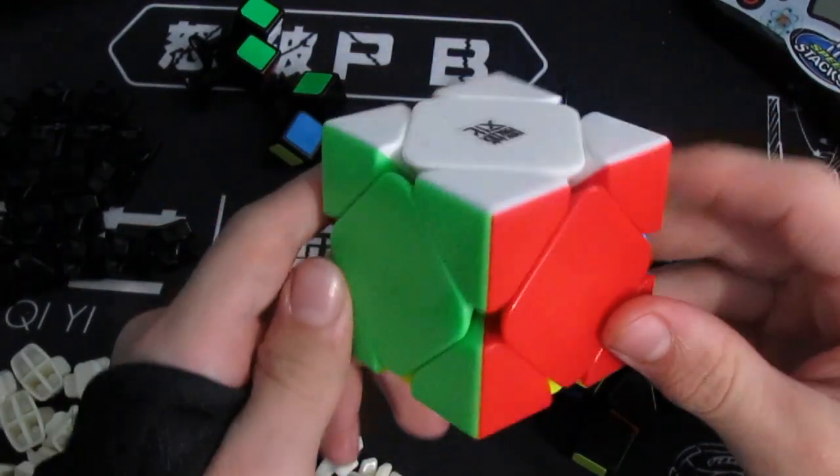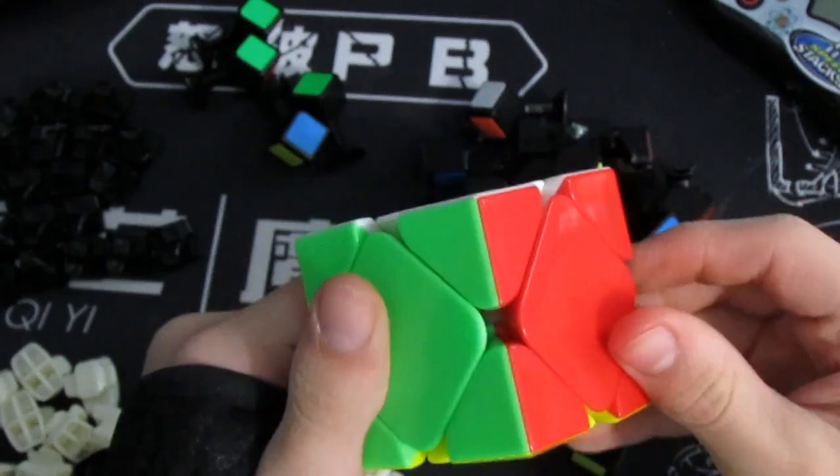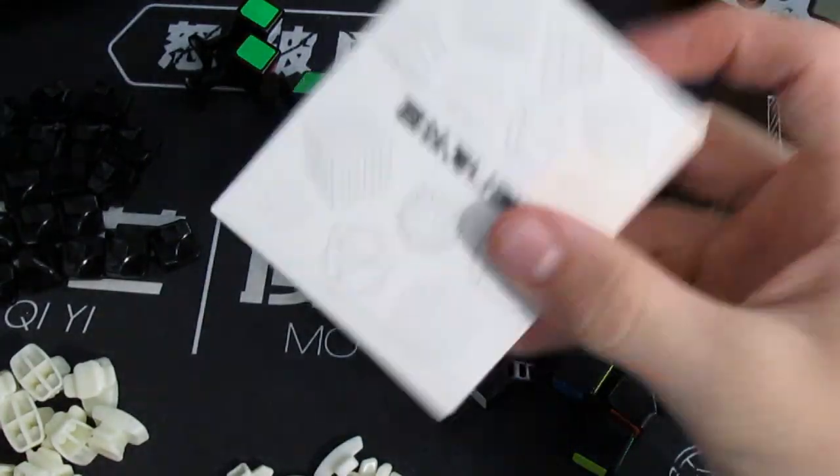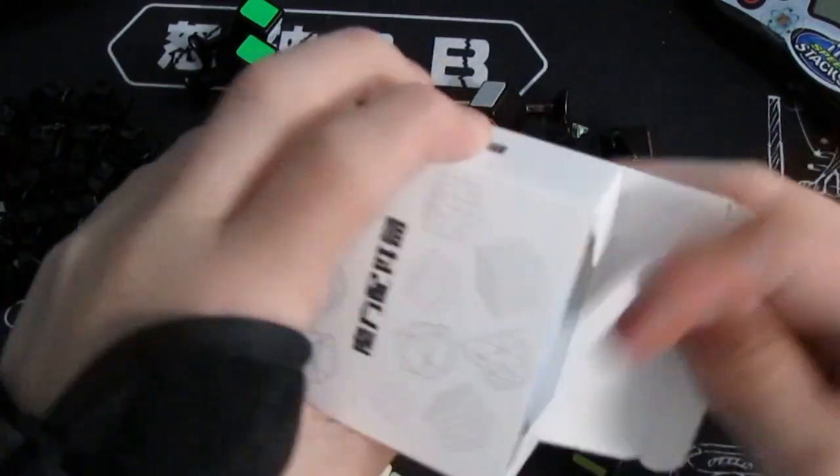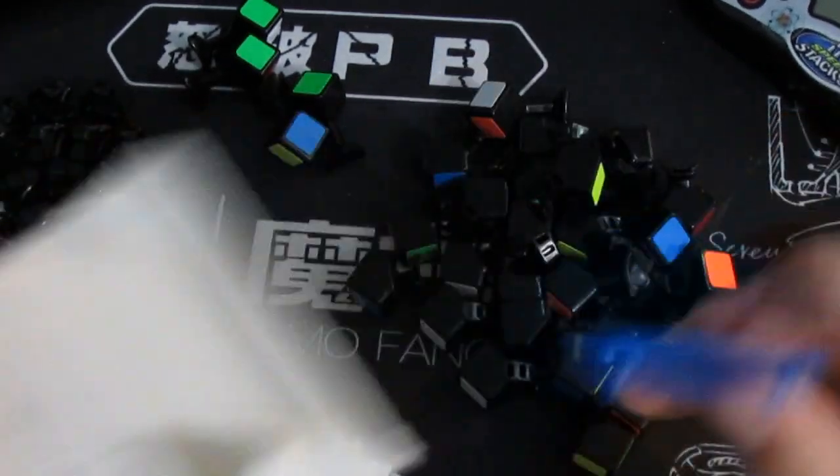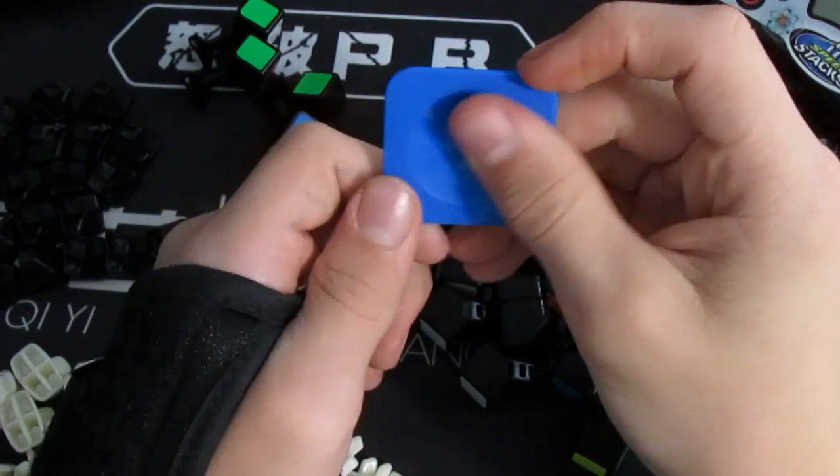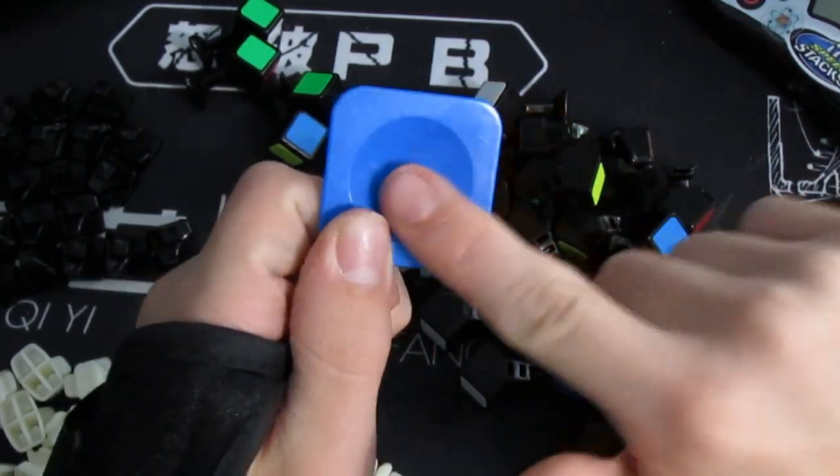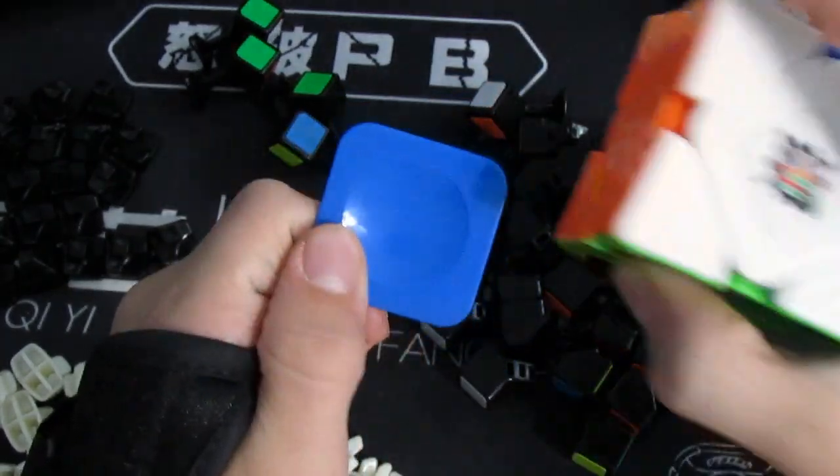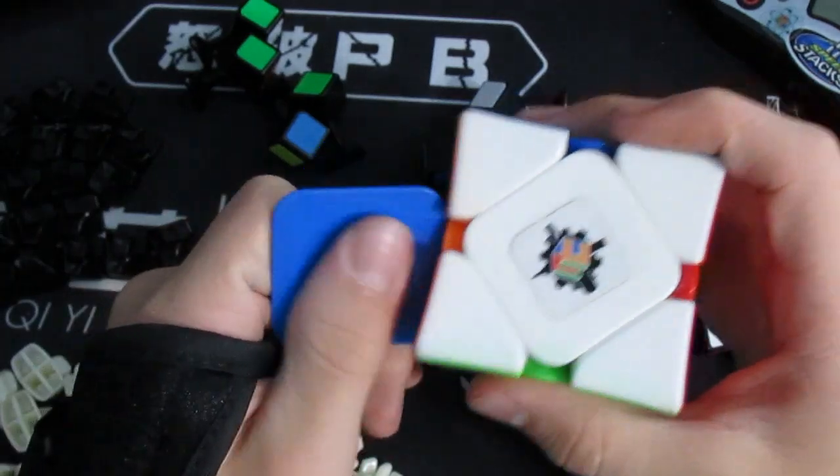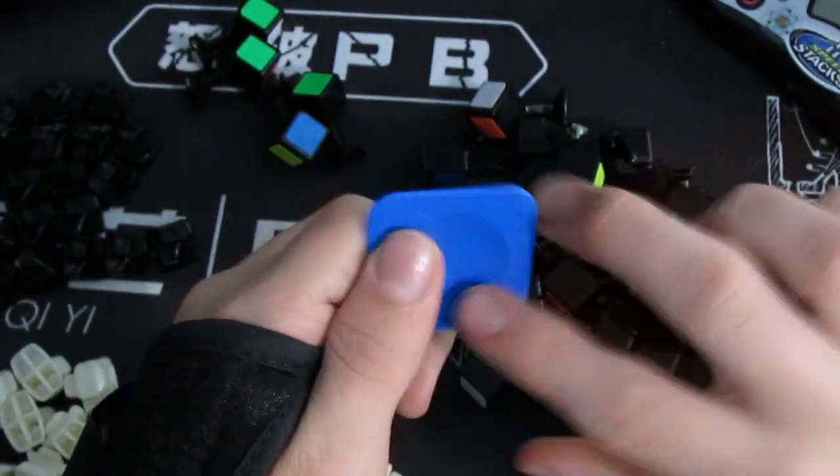For starters, the Moyu Aoyan cube comes with a box and in the box there are these caps that go on the centers and this helps with grip. You can see how they're kind of concave but it's much different from this because it's more of an indent and it's less space.